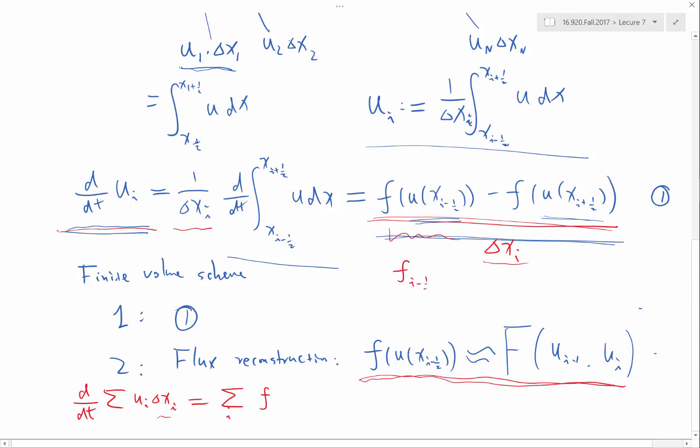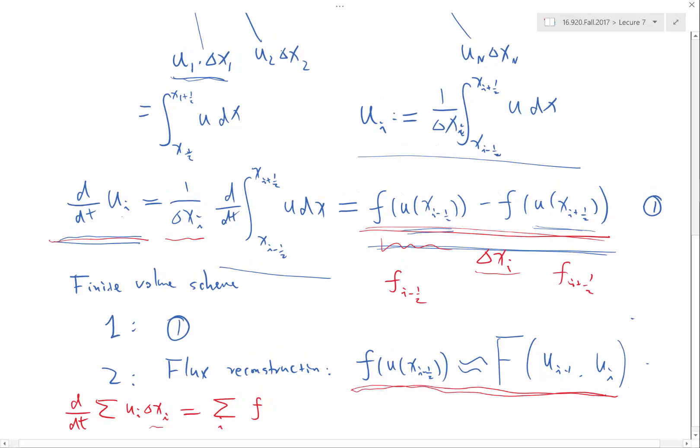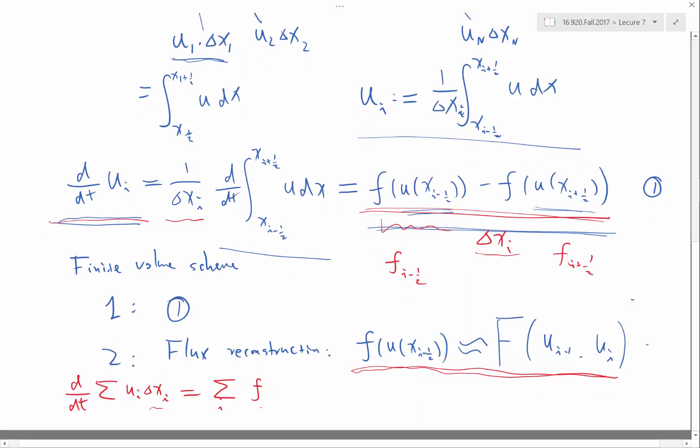Let me write a shorthand as f_{i-1/2} to be f(u) at x_{i-1} and f(u) at x_{i+1}. So the summation over i of f_{i-1/2} minus f_{i+1/2}, and all of these cancel except for the very first one.